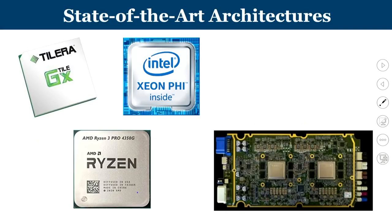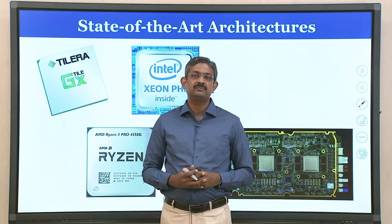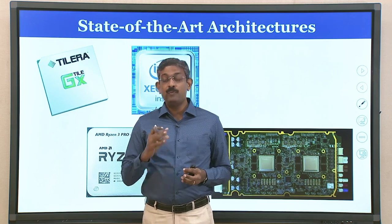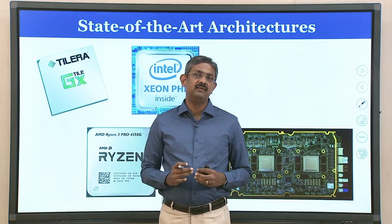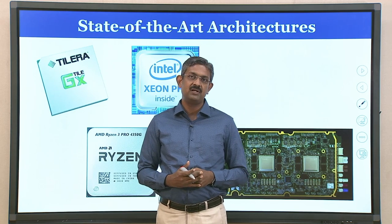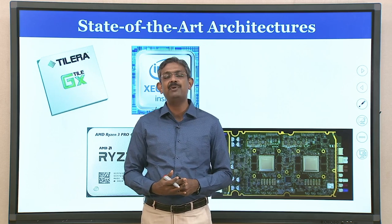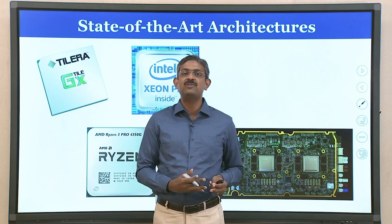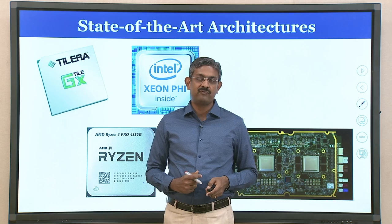There are many state-of-the-art architectures already in the market, like the Tilera TILE-Gx, Intel Xeon Phi, AMD Ryzen Threadripper microprocessors, and the latest Tesla-based systems used for autonomous vehicles. We want emerging graduates to be equipped with the necessary skills to understand and appreciate the internals of these latest microprocessors and bridge the gap between graduate skill sets and industry requirements.